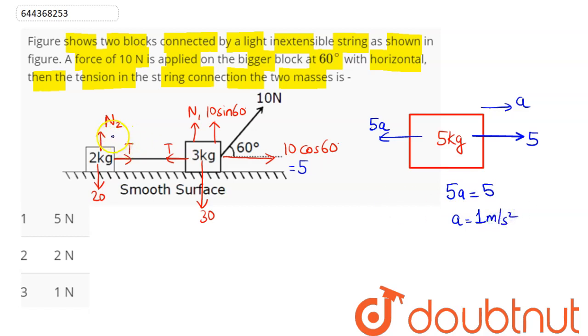So we can say this system moves with common acceleration as 1. So both masses move with 1 meter per second square towards right. So if we consider this 2 kg block here, pseudo force will act towards the left